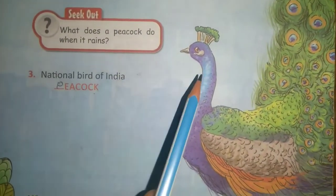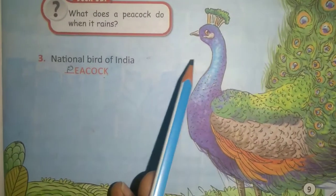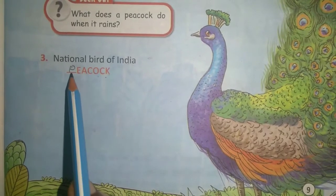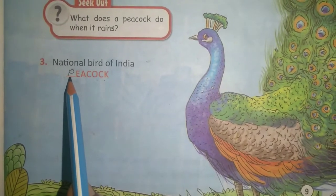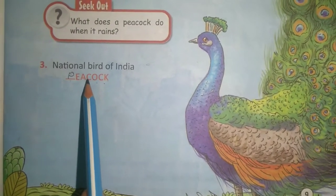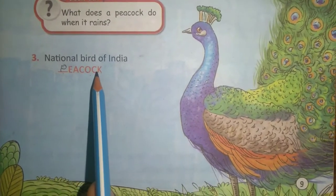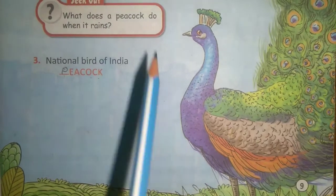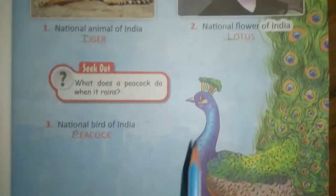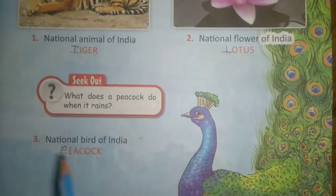Your third picture is the national bird of India. Our national bird of India is peacock. Spelling of peacock: P-E-A-C-O-C-K. So today you have learnt the three symbols.